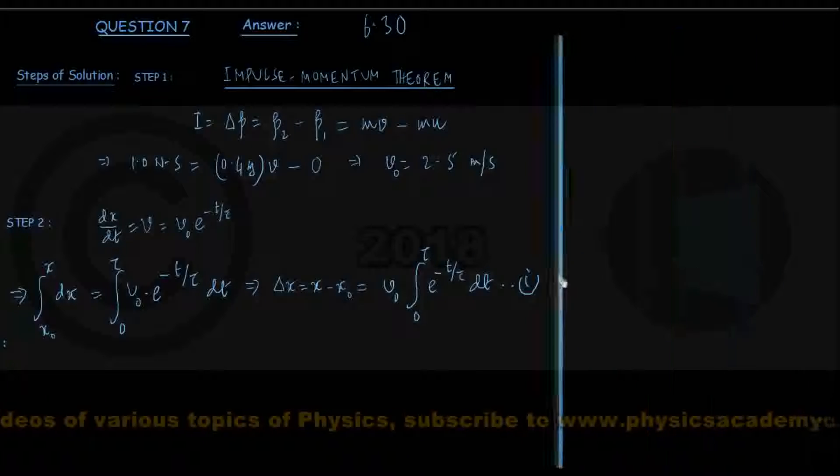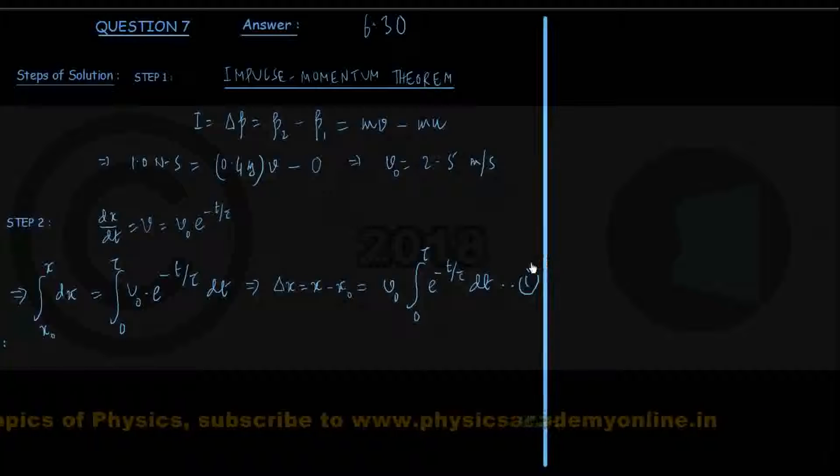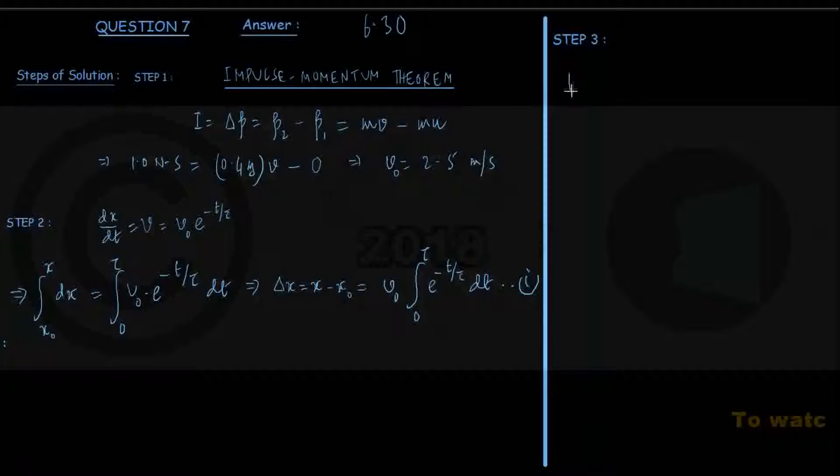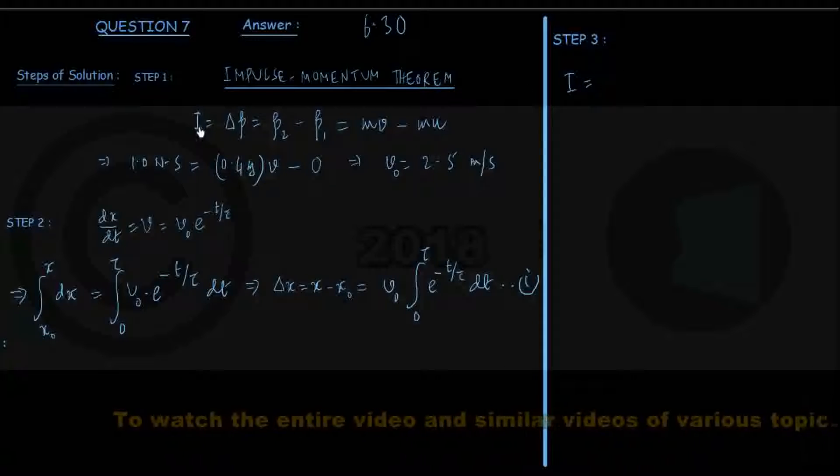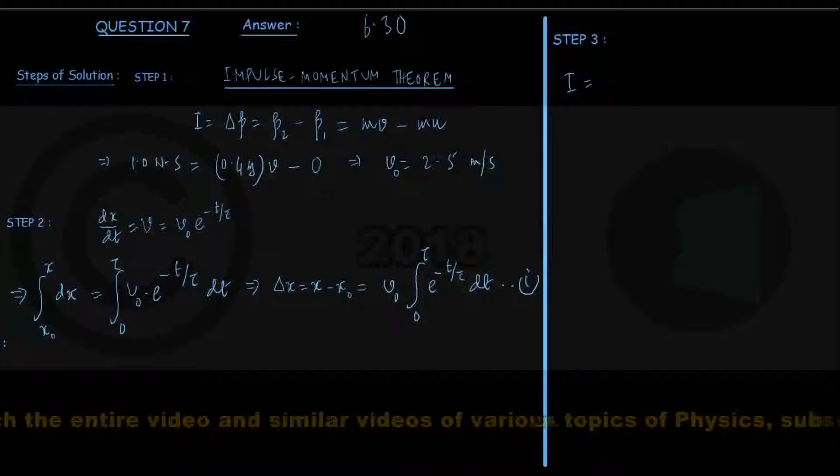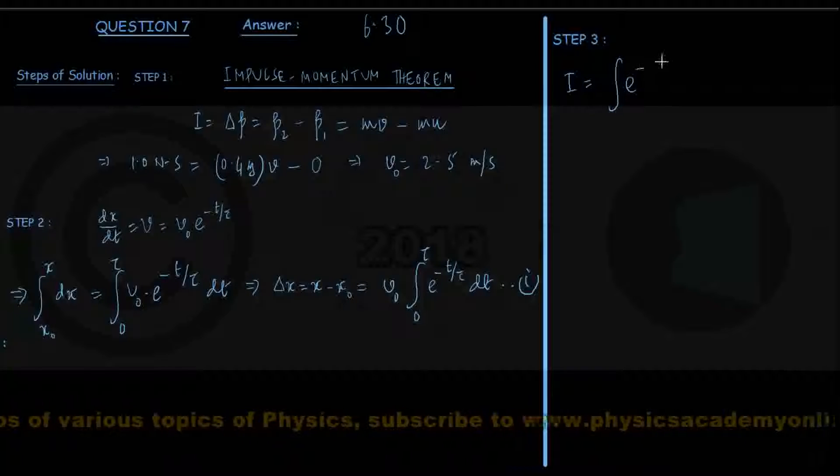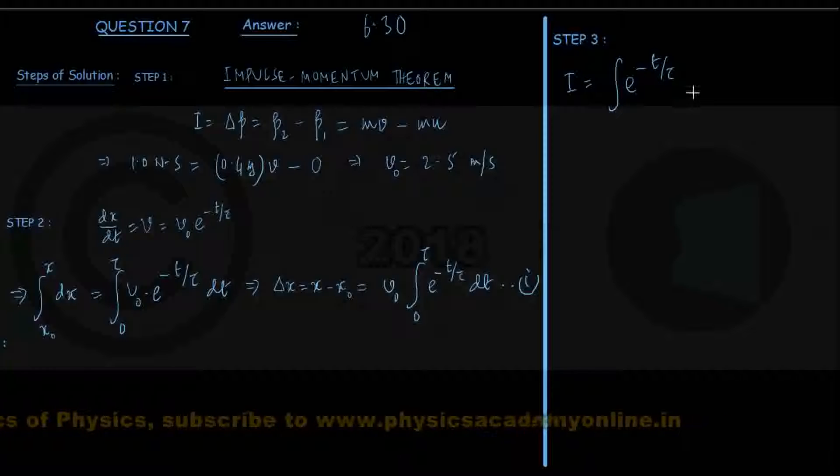I shall show my step 3 here: integrating this right hand side of equation number 1. We define an indefinite integral as I equals this, don't confuse that with the I used earlier for impulse. So this integral I equals e to the power minus t by tau dt. Now how do we evaluate it?